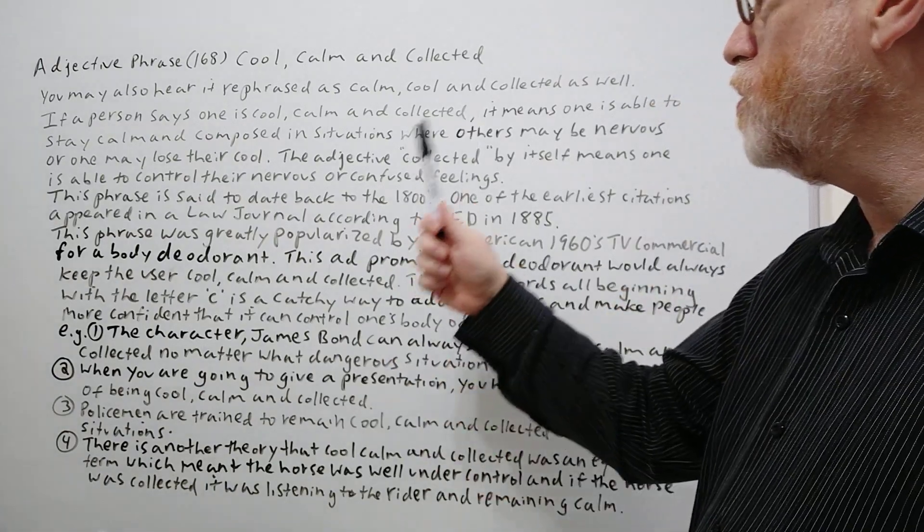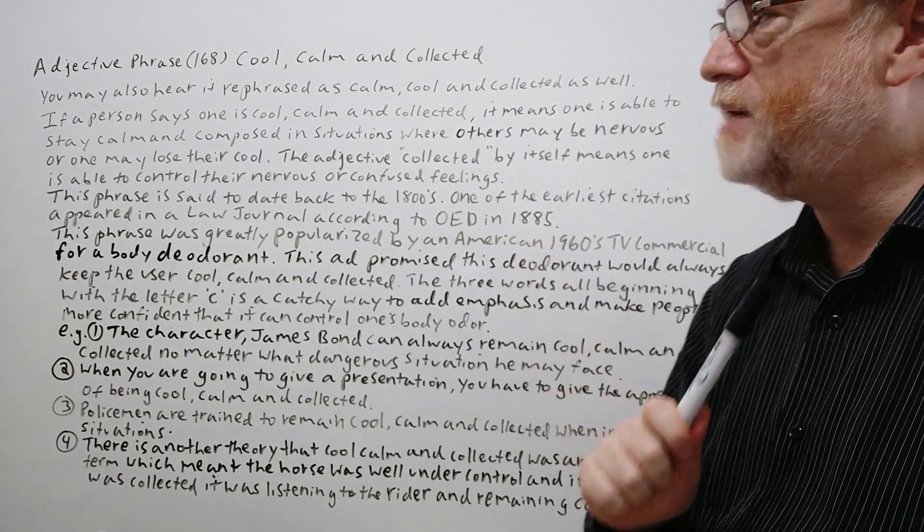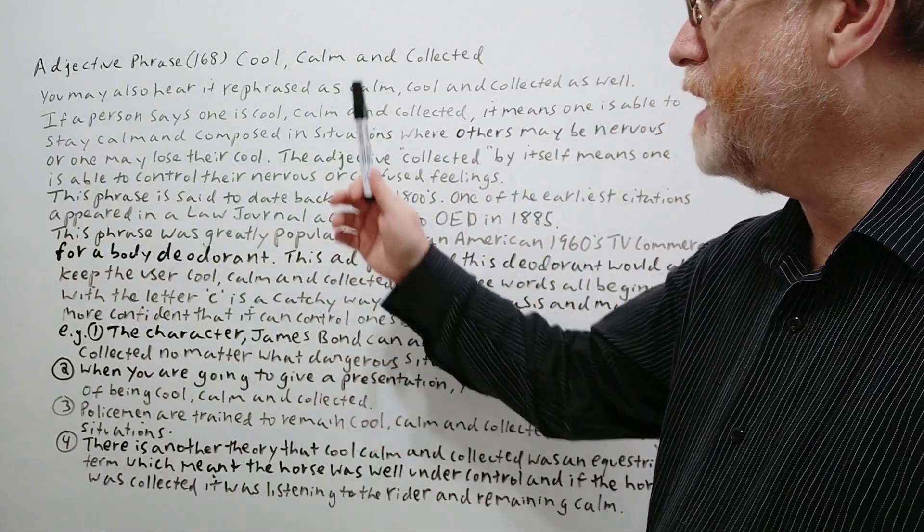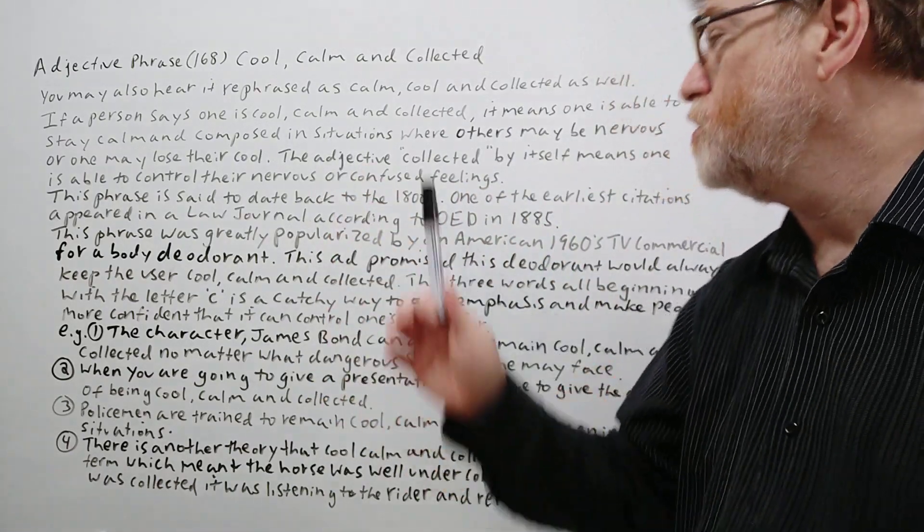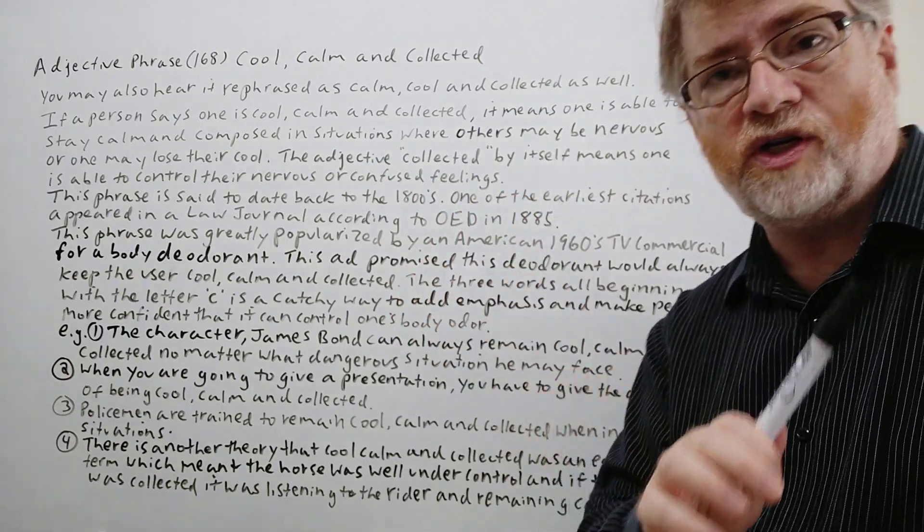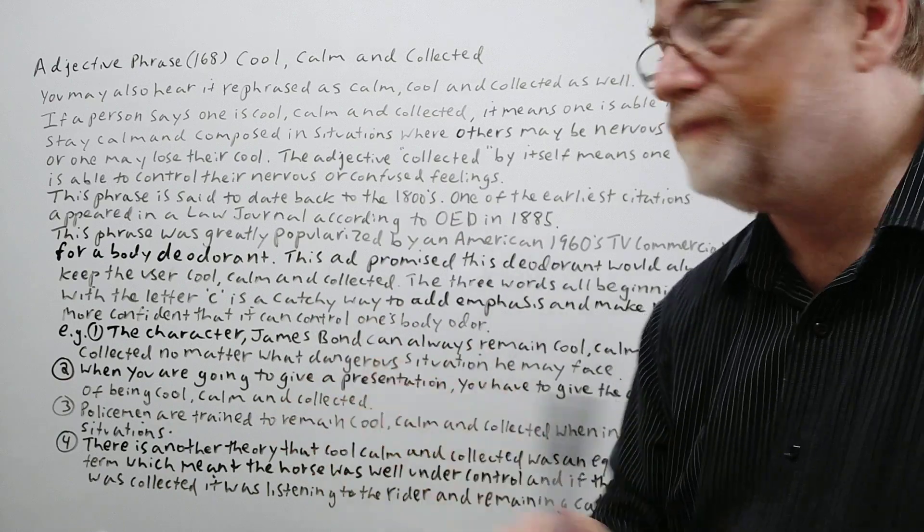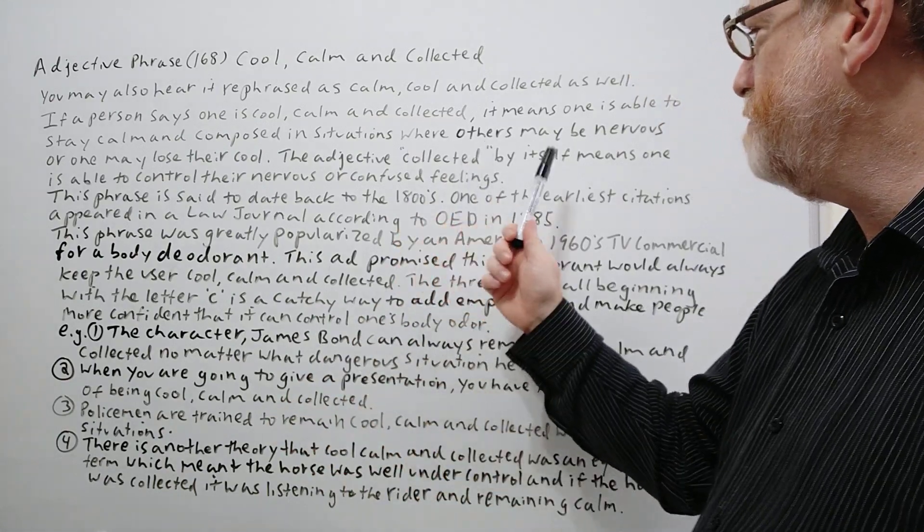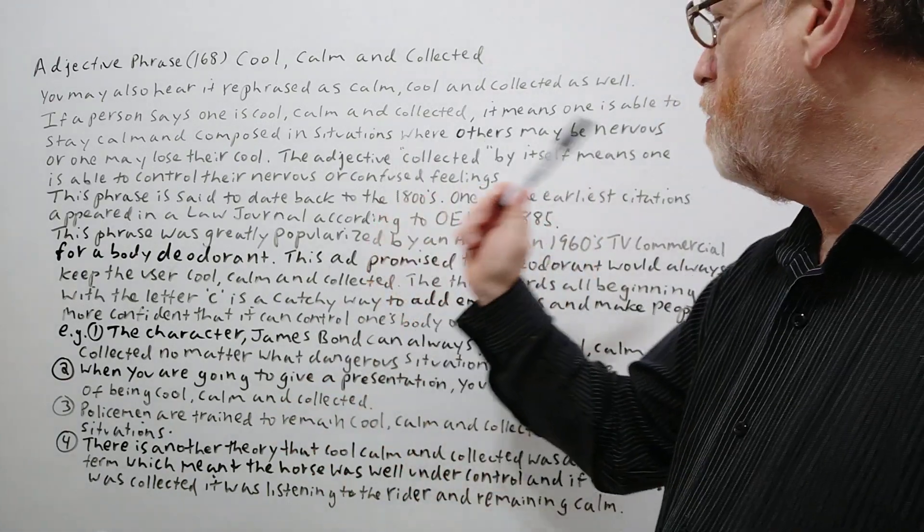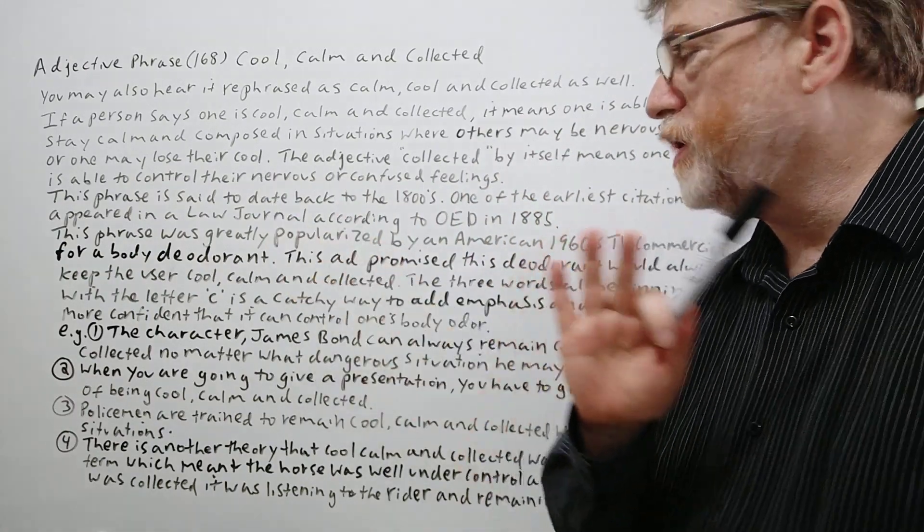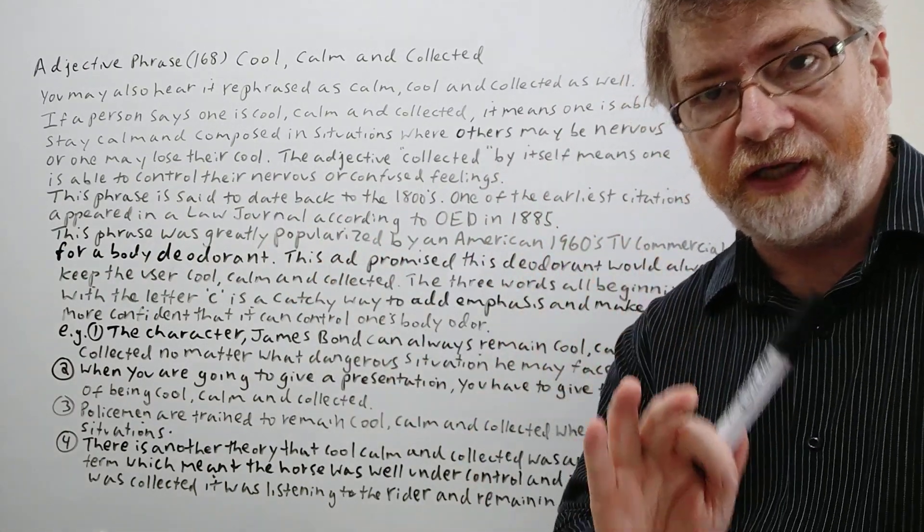If a person says one is cool, calm and collected, it means one is able to stay calm and composed in situations where others may be nervous or one may lose their cool. They may start to panic. The adjective collected by itself means one is able to control their nervous and confused feelings.